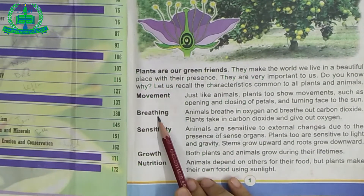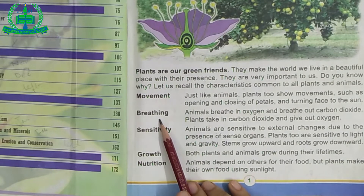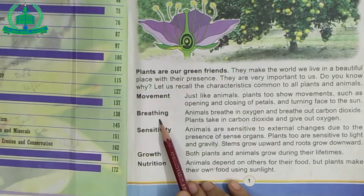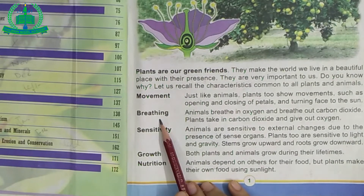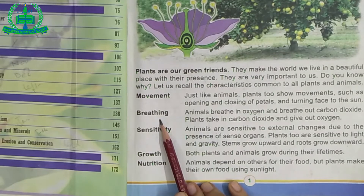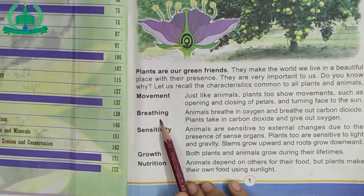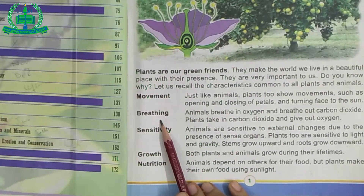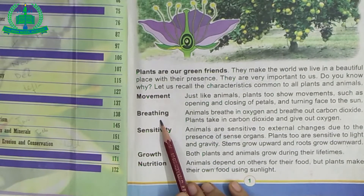Next: Breathing. What is breathing? Plants breathe as well. They take in carbon dioxide and give out oxygen. Oxygen is necessary for all living things.